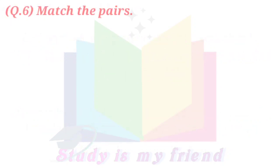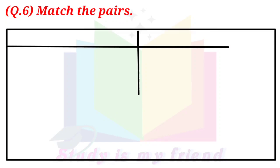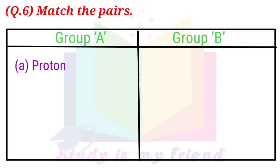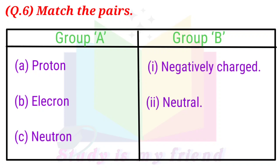Question 6: Match the pairs. Group A: A - Proton, B - Electron, C - Neutron. Group B: 1 - Negatively charged, 2 - Neutral, 3 - Positively charged.